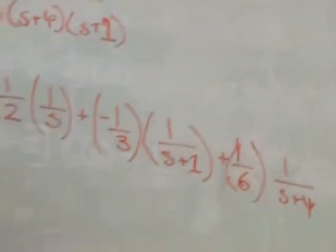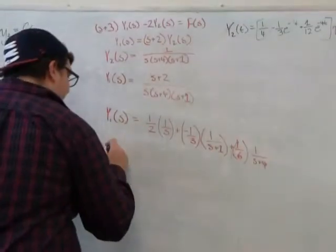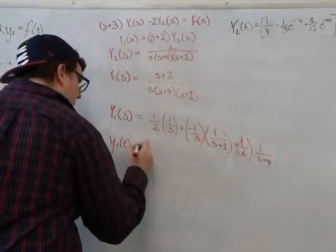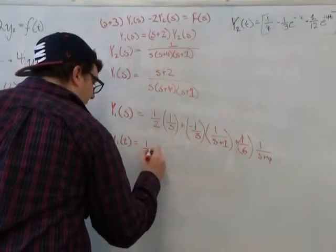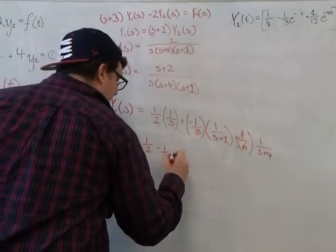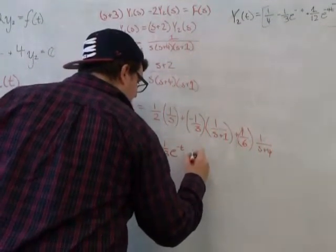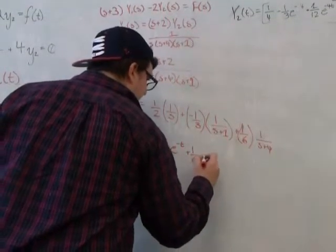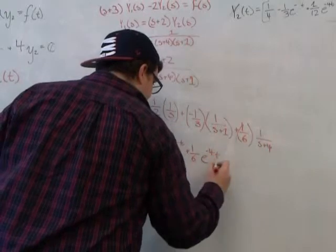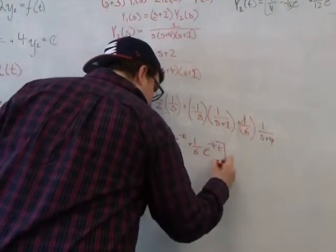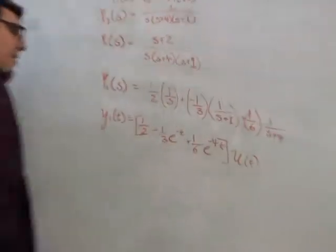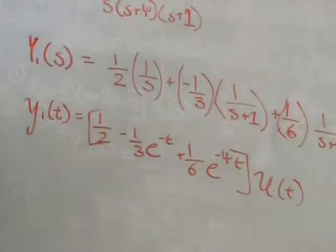And this is the form that we are familiar with, so we can figure out that y1(t) is going to equal 1/2 + 1/6 e^(-4t) + 1/3 e^(-t), all times the Heaviside function.